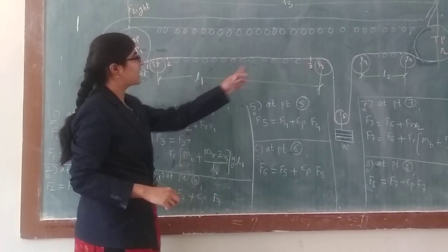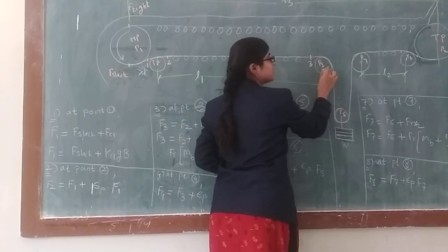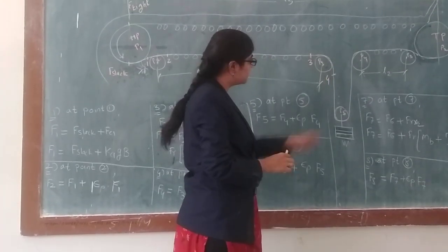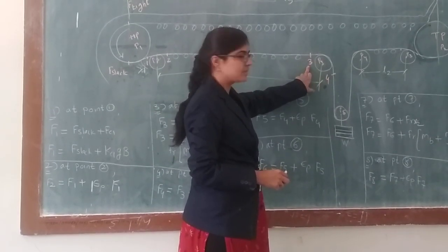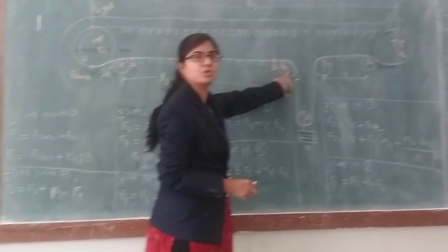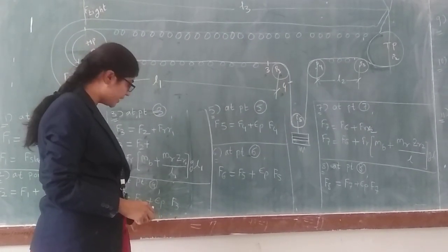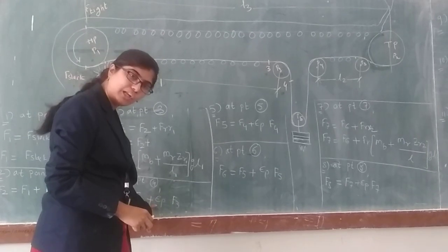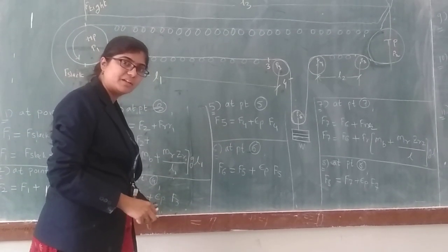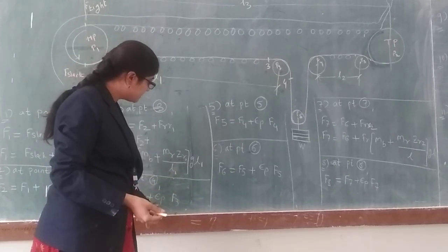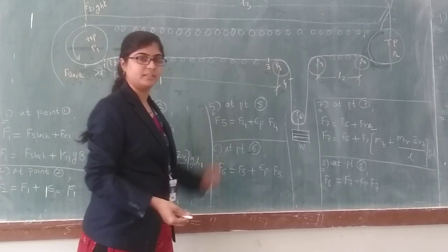Next, point four — you will take point four after the snub pulley. So the force at point four will be F3 plus the frictional resistance due to the snub pulley. F4 is equal to F3 plus epsilon-p (the snub factor, which depends on lap angle) into F3, the frictional resistance at point three. Next, at point five — if we take point five at the same location as four, will it be correct? No, because F4 and F5 will be the same since there is no component between points four and five.